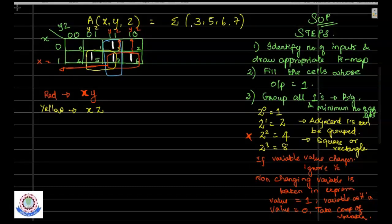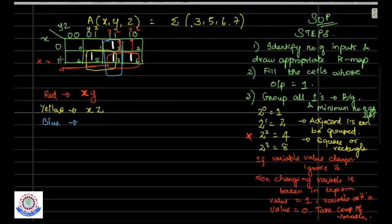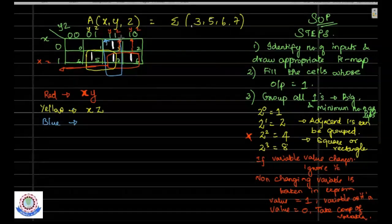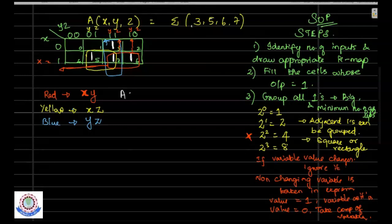Coming to the blue block: extending row-wise, X is changing — X is 0 in the first row and 1 in the second row — so X is omitted. The blue block covers only one column, so I take all variables in that column. Y equals 1 and Z equals 1, so the expression for the blue block is YZ.